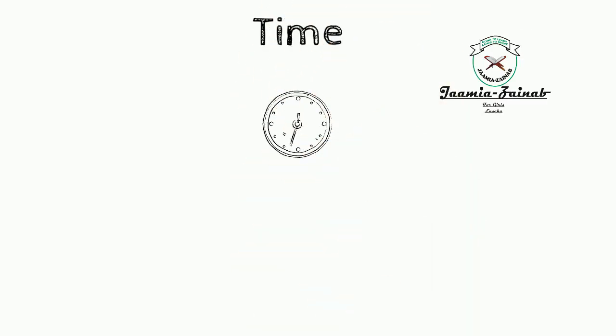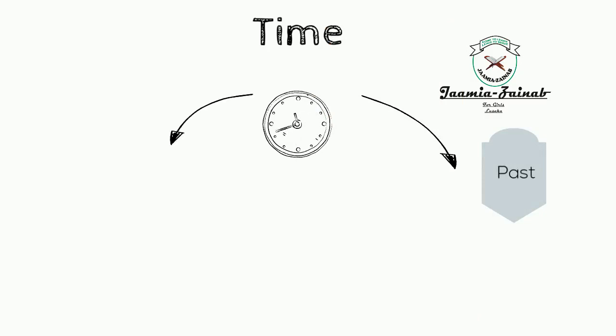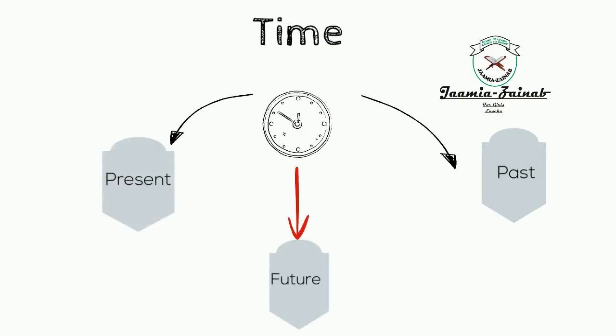We are going to look at the verb in detail when we look at ilmus serf. A verb is mostly associated with time. Time is of three types: present tense, future, and past.